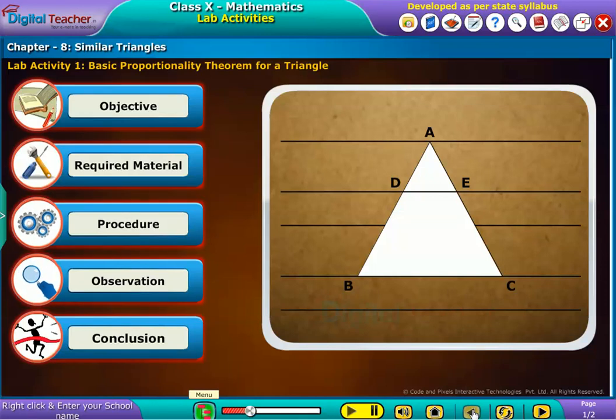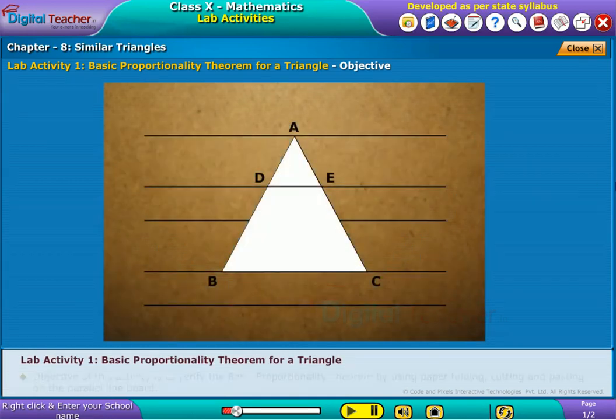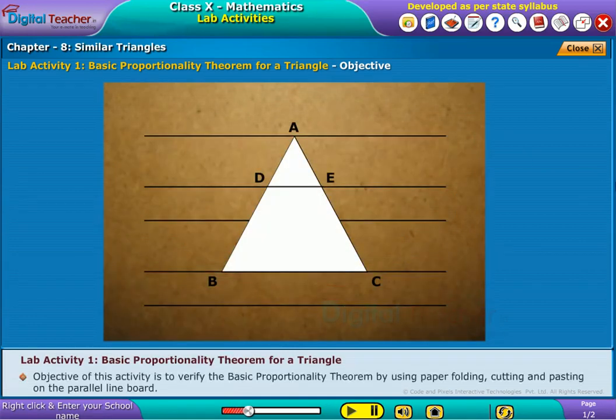Let us do a lab activity to verify the basic proportionality theorem. Click each tab to learn more. The objective of this activity is to verify the basic proportionality theorem by using paper folding, cutting, and pasting on the parallel line board.